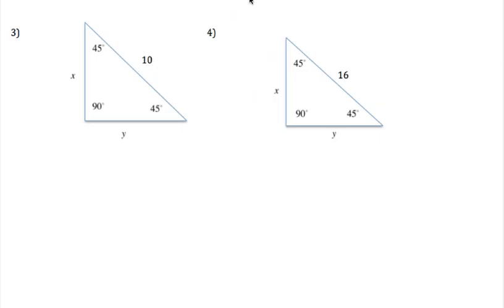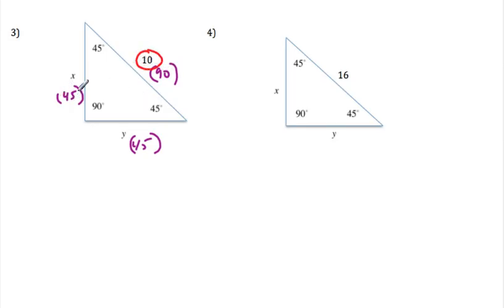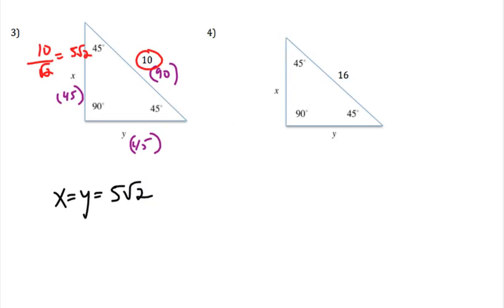In this example, if the hypotenuse is 10, remember that this is the 45 side, this is the other 45 side, and that's the 90 side — because each is opposite its respective angle. When we go from the 90 to the 45, you divide by radical 2. So it's 10 divided by radical 2, which comes out to 5 radical 2. We can verify: 5 radical 2 times radical 2 equals 5 times 2, which equals 10.